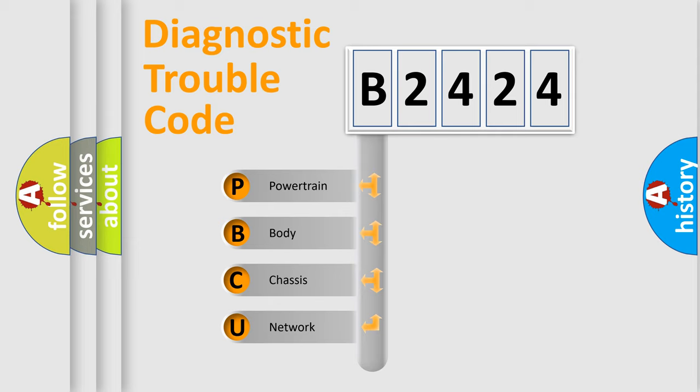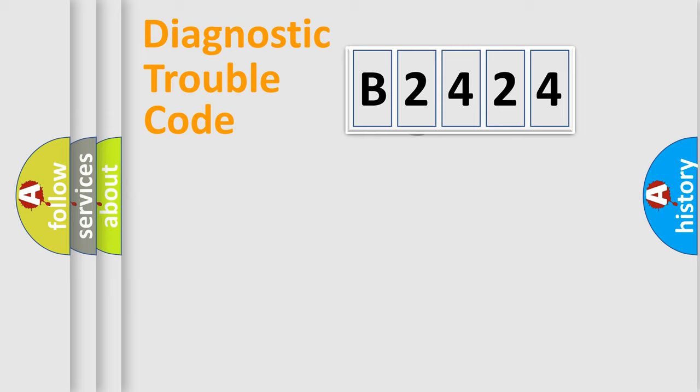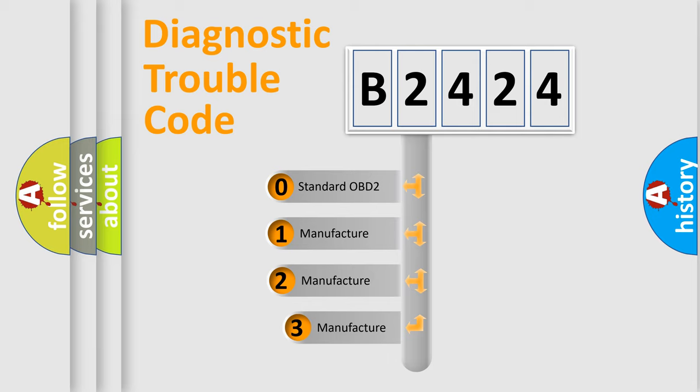We divide the electric system of automobile into the four basic units: Powertrain, Body, Chassis, Network. This distribution is defined in the first character code.